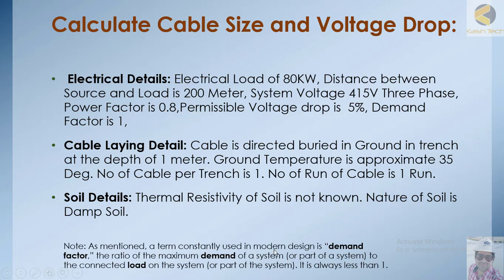Demand factor is a term constantly used in modern design. It is the ratio of maximum demand of a system or part of a system to the connected load, and is always less than one. For example, in a house the maximum demand can be 3 kilowatt whereas the connected load could be 2 kilowatt. This is how the demand factor is calculated.